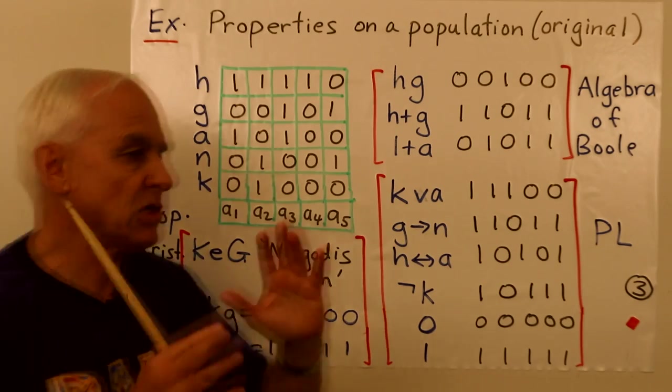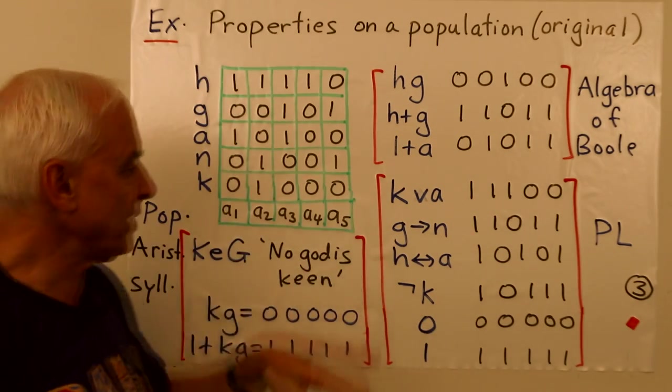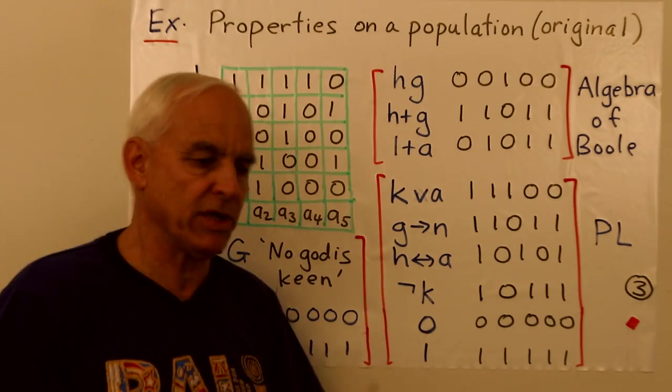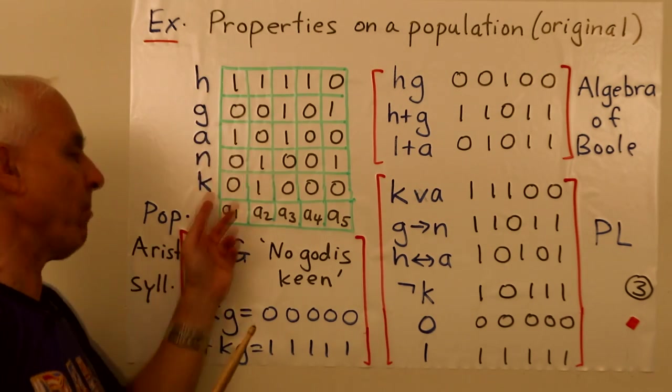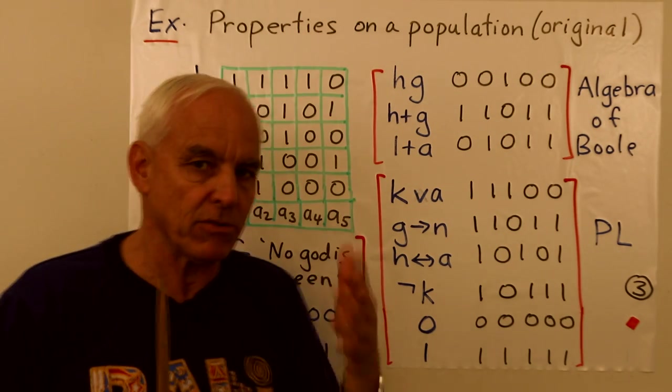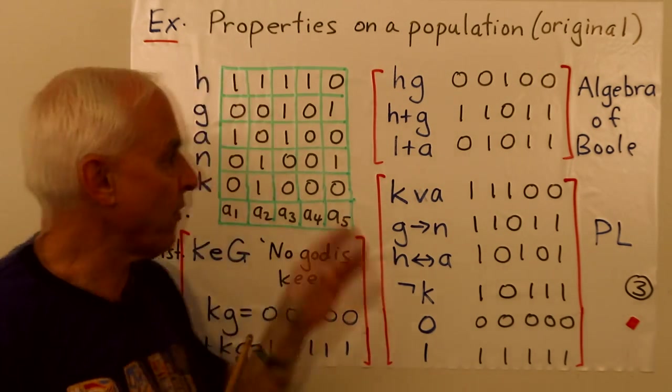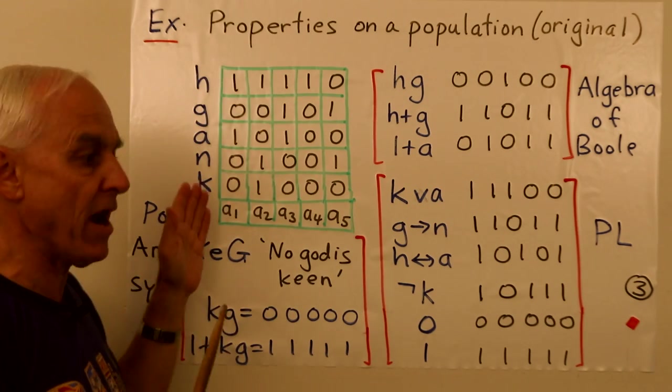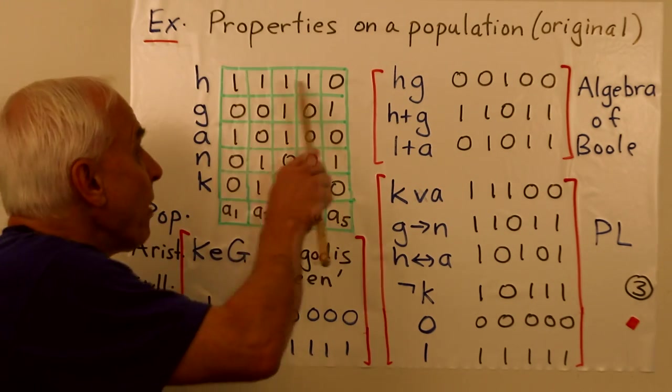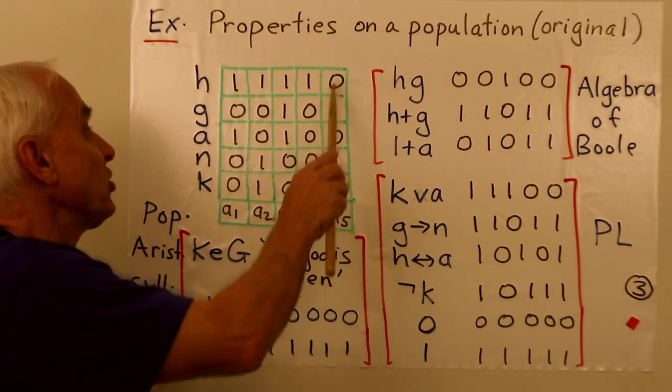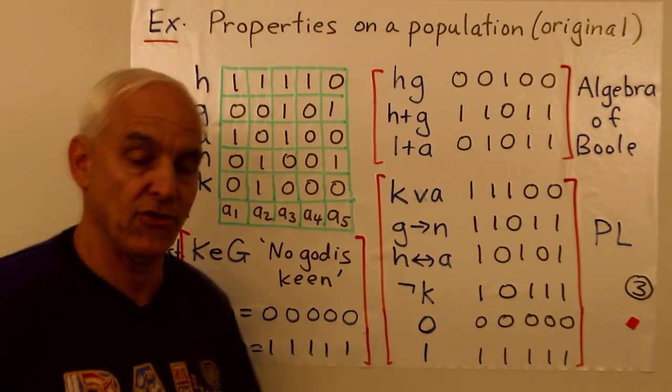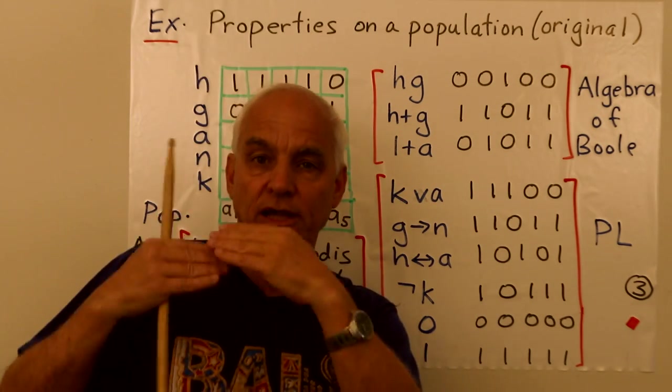From the algebra of Boole point of view, what we do is we dispense with the population, we dispense with the actual meanings or the fussing about the English words for these defining aspects of these things. And we just think about these vectors. So this is a vector H, this is a vector G, this is a vector A, and so on. And we do algebra with these vectors.